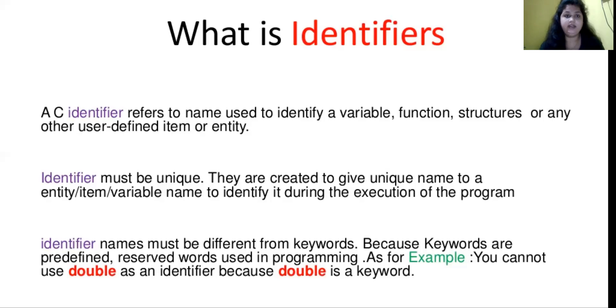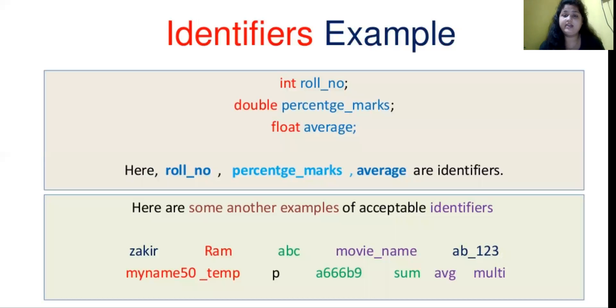Here we have a short example. Integer roll_no, double percentage_marks, float average. Integer, double or float are your keywords. These are predefined in C language. And roll_no, percentage_marks and average are your identifiers.